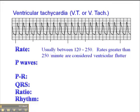The rate is usually between 120 and 150, but you can have a slow VTAC as slow as 100 beats per minute. Between 100 and 120 would be a slow VTAC. Typically, VTACs are in the 120 to 250 range. Rates greater than 250 are considered ventricular flutter.